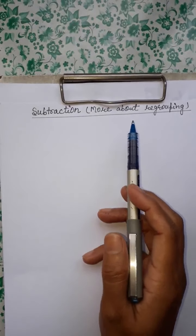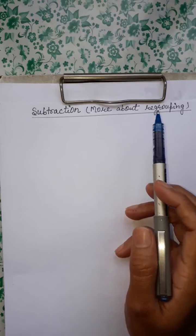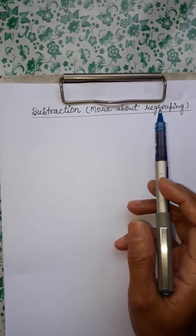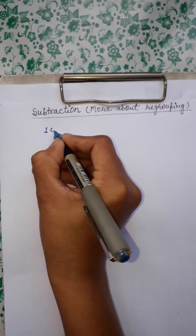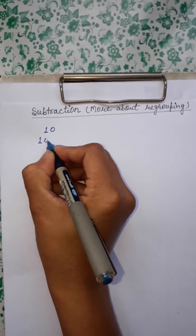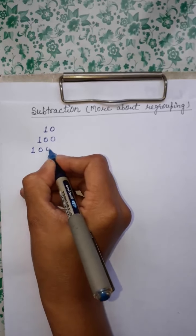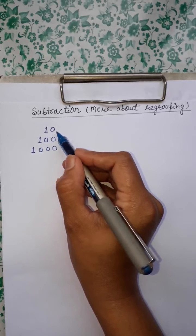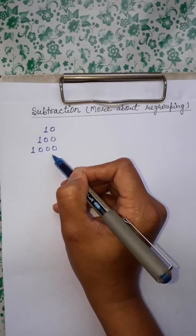Before going to our topic — subtraction more about regrouping — I want to explain something. Now you have studied 2-digit, 3-digit, and 4-digit numbers in your class. Here we have the smallest 2-digit number, smallest 3-digit number, and smallest 4-digit number.